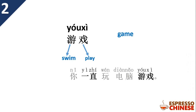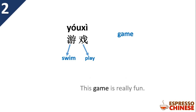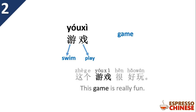Example: 你一直玩电脑游戏 — 'You keep playing computer games.' How do you say 'This game is really fun'? You say 这个游戏很好玩. 好玩 means 'fun', so 很好玩 means 'really fun' or 'very fun'.